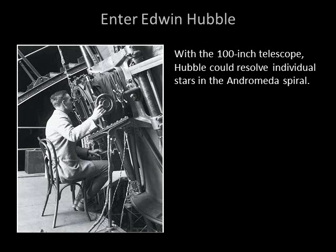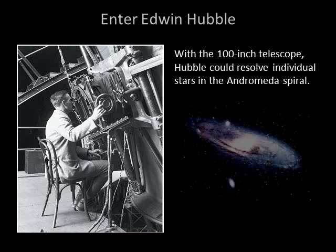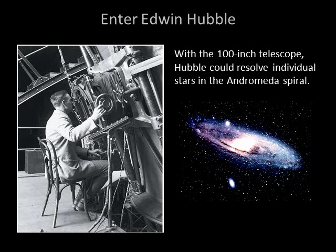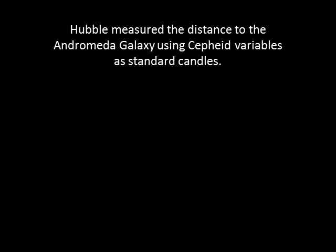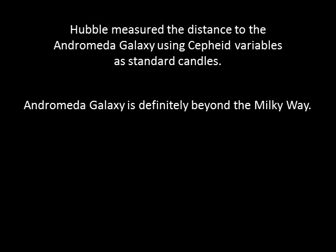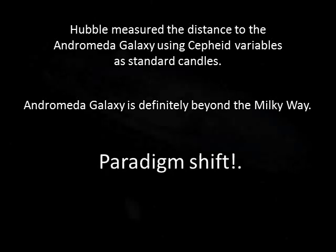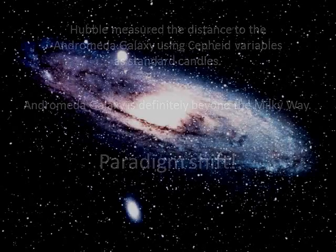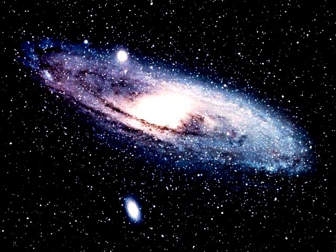Even better was when he could make out Cepheid variables in Andromeda. He used Henrietta Leavitt's period-luminosity relation to estimate the luminosities of the Cepheids, and from that he was able to measure the distance to the Andromeda galaxy. Although Hubble underestimated the true distance by about half, he still found that Andromeda was far beyond the Milky Way — the Andromeda nebula was, in fact, a separate galaxy. This marked the beginning of a paradigm shift on how we viewed the universe; we learned that our Milky Way is one among many islands of stars in a vast cosmic ocean.